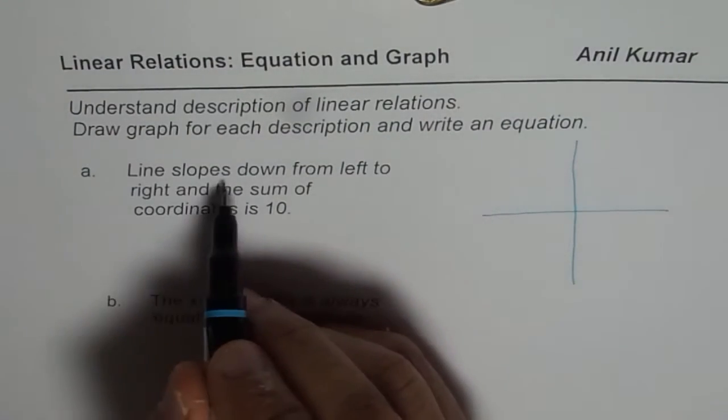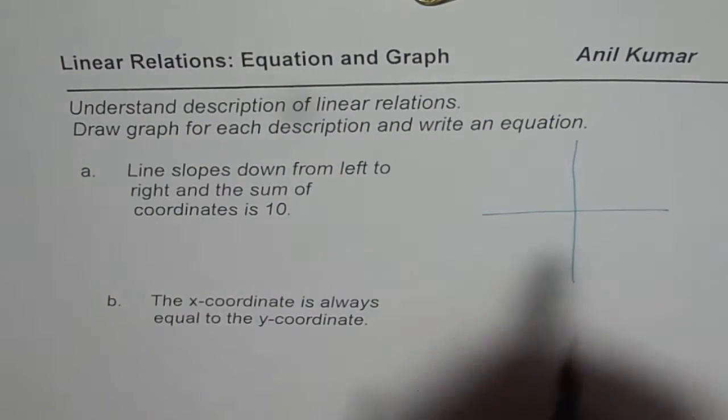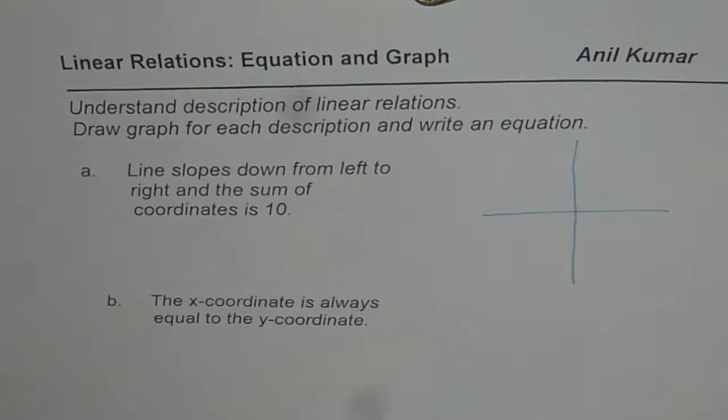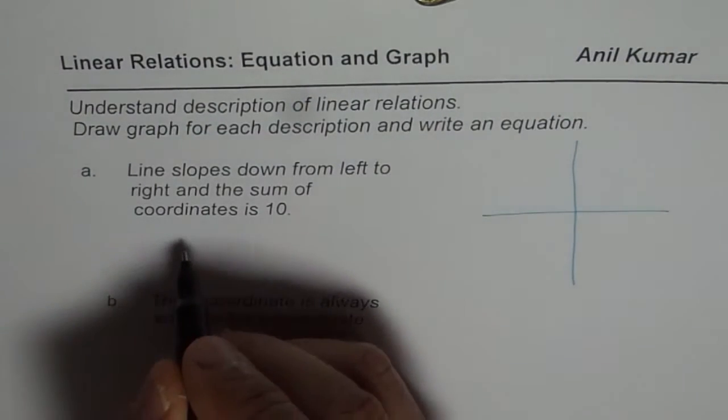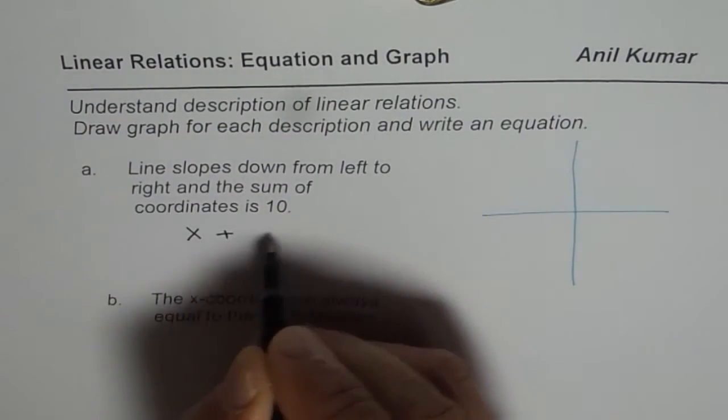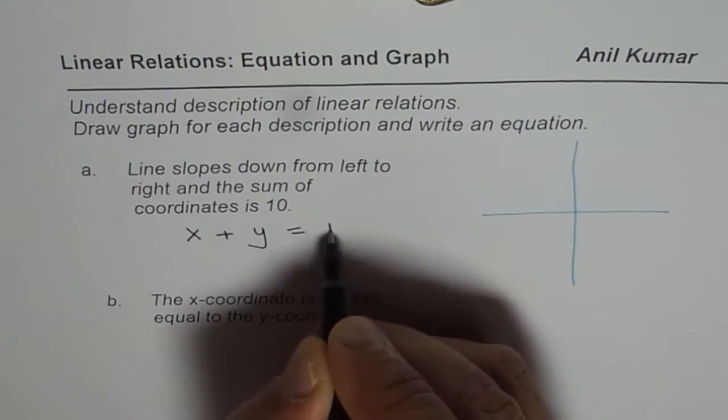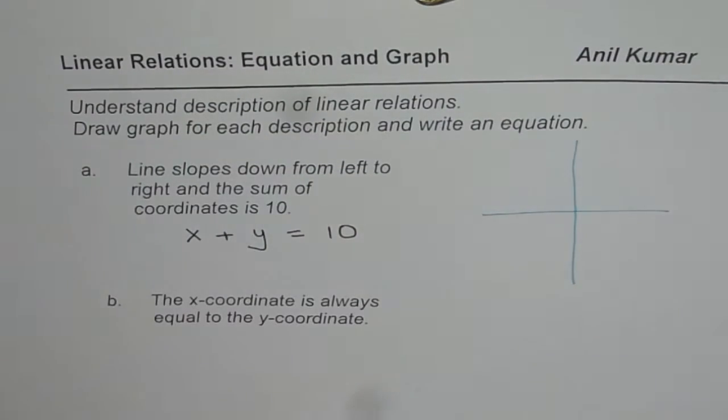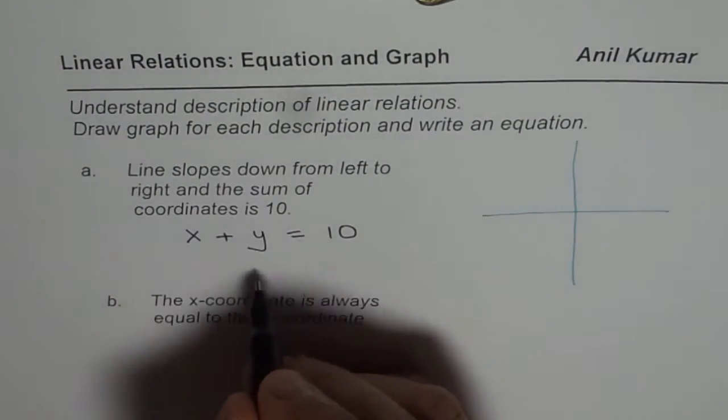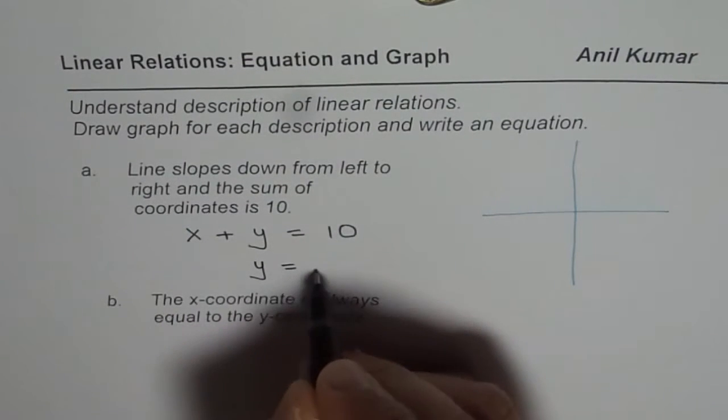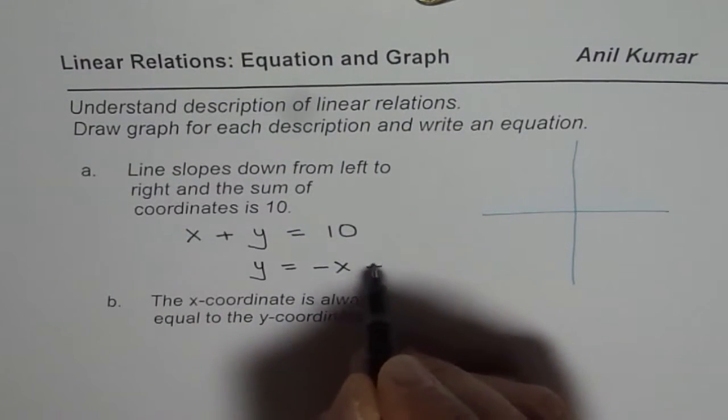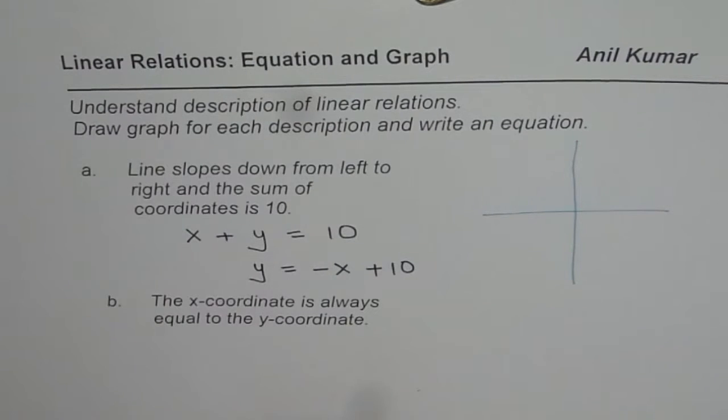So we have a situation where this line is sloping down from left to right and sum of coordinates is 10. That really means that x plus y equals 10. So that is the sum of coordinates. You could rearrange and write this as y equals minus x plus 10.